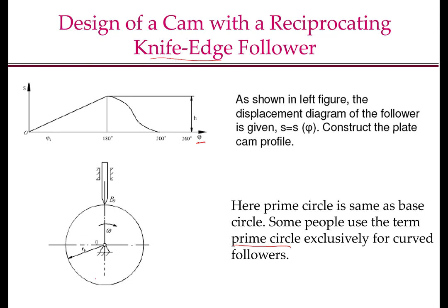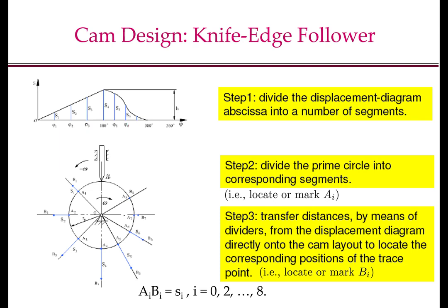Note that if this circle was the profile of the cam, then as the cam rotates in the clockwise direction, the follower would stay in the same place. The first step is to divide the x-axis of the displacement diagram into a number of segments; this division can be done with equal or unequal spacing. Then we need to divide the prime circle into corresponding segments. Since the cam is rotating clockwise, we will be measuring the angles anticlockwise. So we take angle phi 1 and measure it here, marking point A1 on the prime circle. Then we take angle phi 2 and mark point A2, then phi 3 and A3, and so on up to A8.